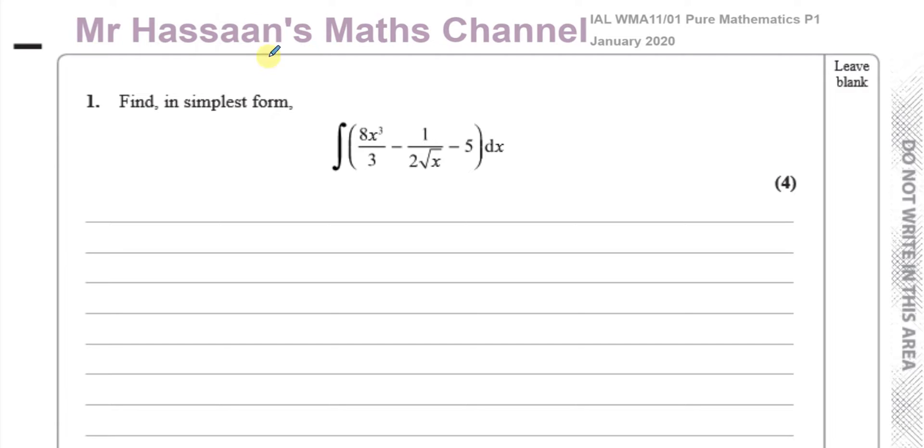And I'll have a playlist with topics and a playlist with this paper in it. So if you want to see the rest of the questions in the paper, you can click on the icon at the end which will have the playlist link on it. Now, it says find in simplest terms the integral with respect to x of 8x cubed minus 1 over 2 times the square root of x.